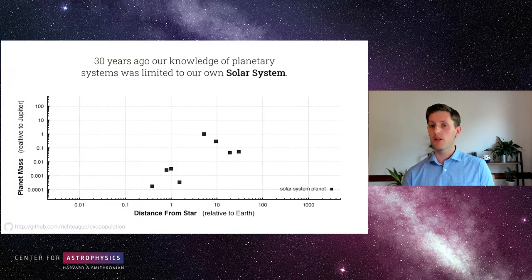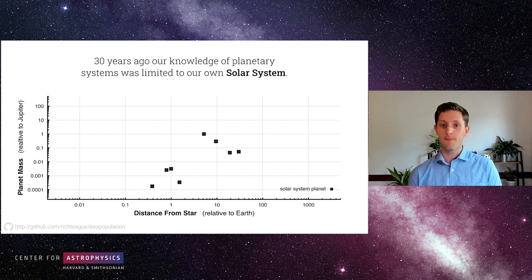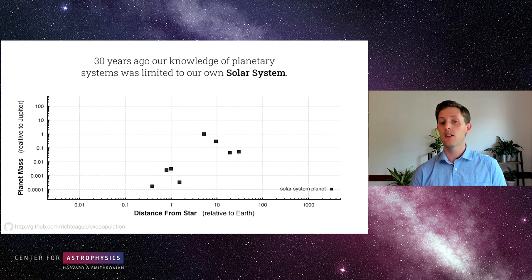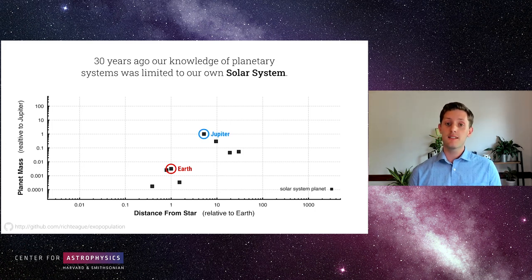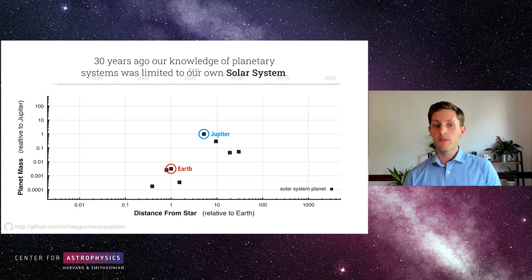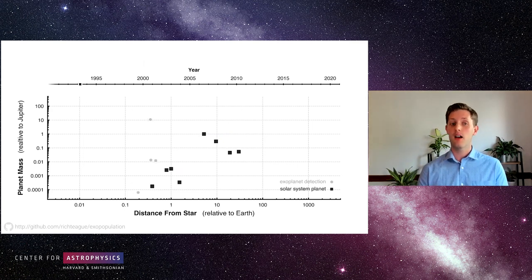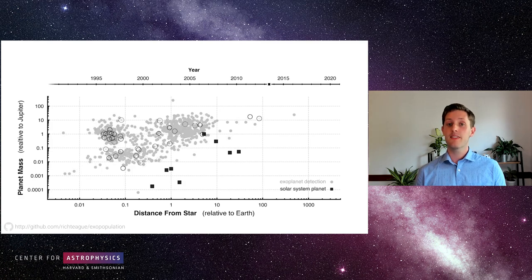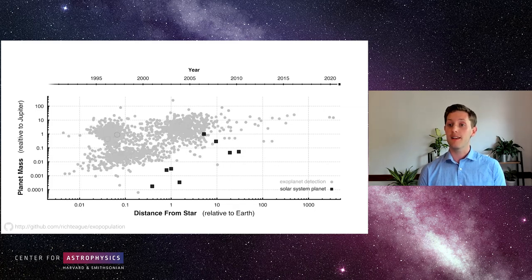I want to take a step back to motivate why we're looking at these protoplanetary disks. This figure underpins a lot of what we're doing. This was our knowledge of planetary systems 30 years ago — planetary mass on the y-axis and orbital distance from the star on the x-axis. Looking at our own solar system, we had four rocky terrestrial planets close to the sun and four gas giants slightly further away. With this architecture in mind, we came up with many formation scenarios. However, with the first detection of an extrasolar planet, our view of what a planetary system could be rapidly changed, catalyzing 30 years of intensive research.